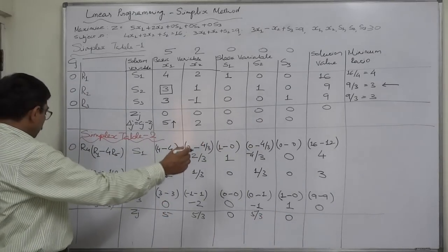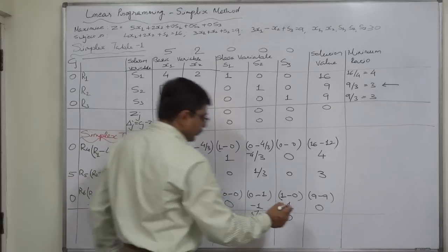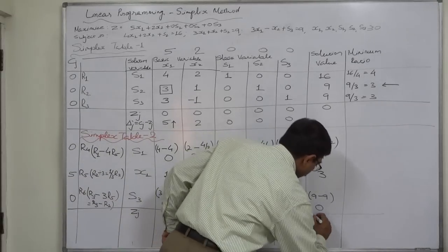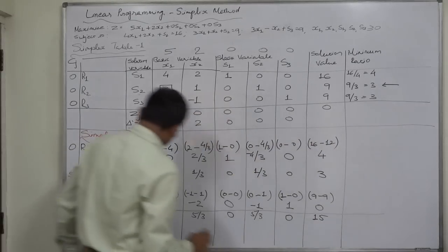0 into 4 is 0, 5 into 3 is 15, 0 into 0 is 0, so the ZJ value here is 15.